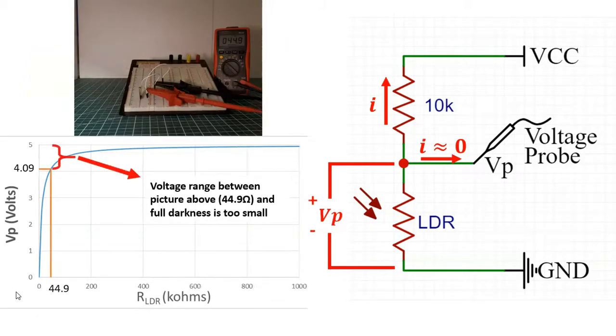We had 44.9 kilo ohms which means that our range between that point and full darkness will be anywhere between 4 and 5 volts which doesn't allow us to do much from a signal analysis standpoint. What we would want is that when it's bright we get a voltage that is much different than when it's dark. So what we need to do is modify the circuit to provide a smoother curve and I'll show you how to do that in the example coming up next.